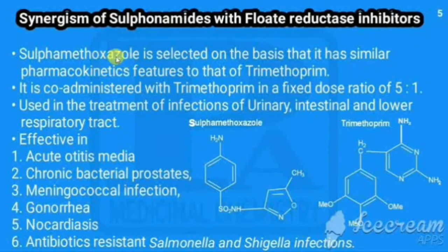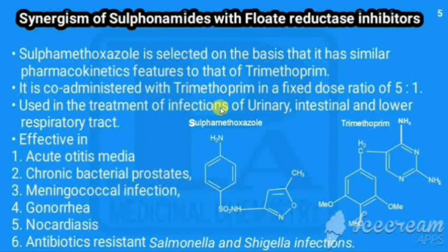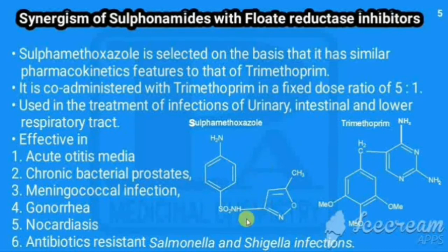Sulfamethoxazole was selected because it has similar pharmacokinetic properties to trimethoprim. It is co-administered with trimethoprim in a 5:1 ratio. The combination is used in the treatment of infections of the urinary, intestinal, and lower respiratory tract, and is effective in acute otitis media, chronic bacterial prostatitis, meningococcal infection, gonorrhea, nocardiasis, and antibiotic-resistant Salmonella and Shigella infections. The heterocyclic ring in sulfamethoxazole is isoxazole, with a methyl group, and the basic moiety is the sulfanilamide moiety.